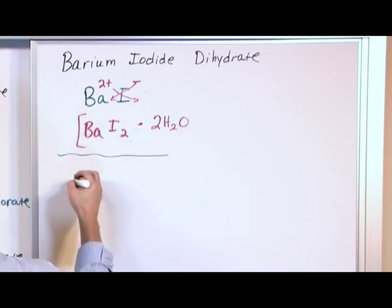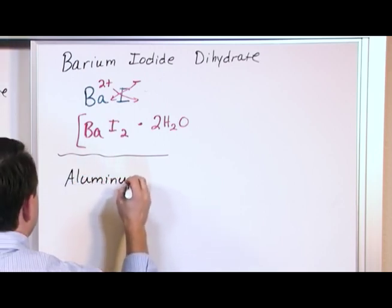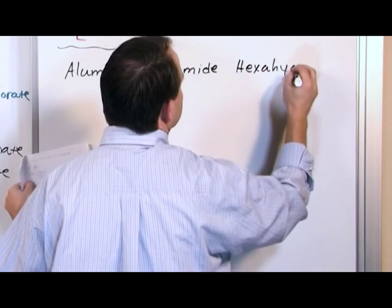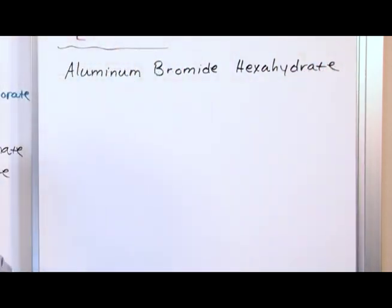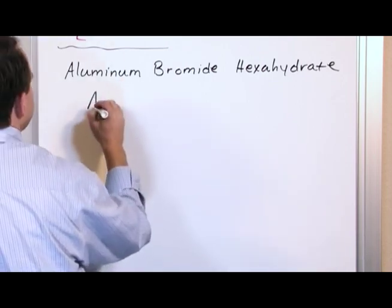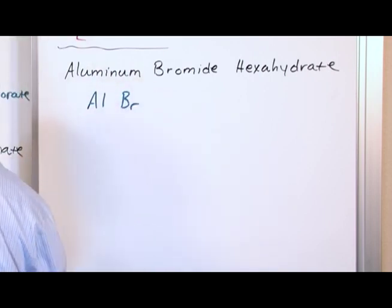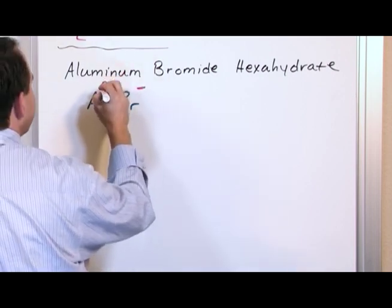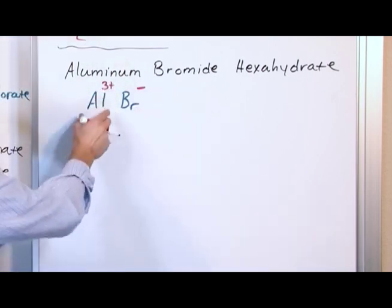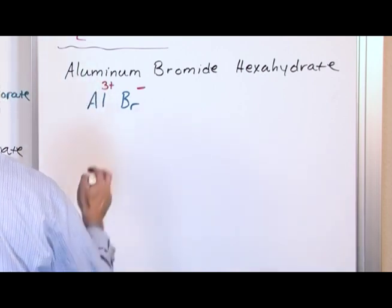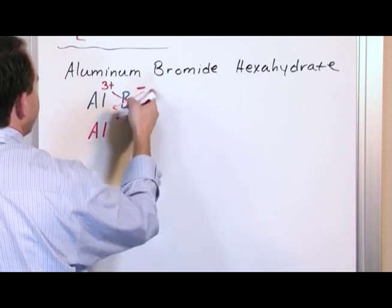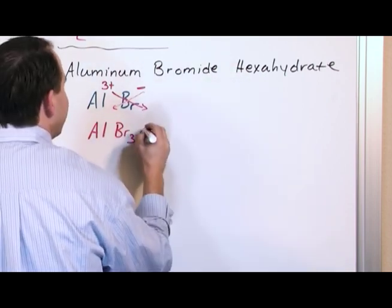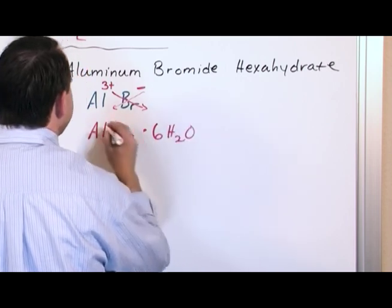What about aluminum bromide hexahydrate? Pretty simple. Take aluminum, take bromine, and now we have to figure out the ionic part of the compound. Bromine is always going to have a negative one charge. Aluminum always wants to have a plus three charge. So we'll do the crisscross and we'll have AlBr3. Hexahydrate, hexa means six, so AlBr3·6H2O.